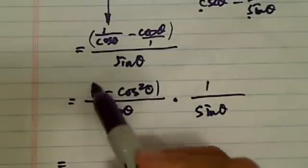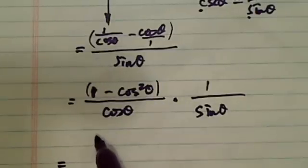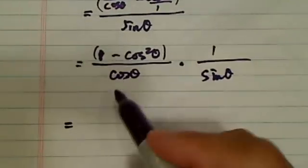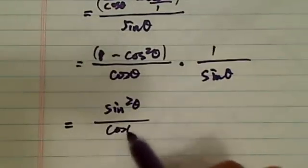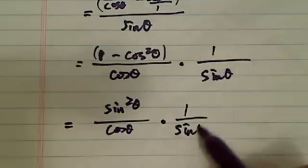Now, trig identity here, because cosine theta squared plus sine theta squared equal to 1, this can be simplified into sine theta squared, and then cosine theta here times 1 over sine theta.